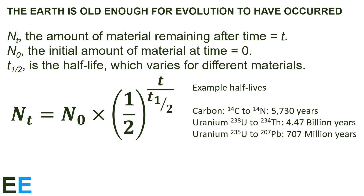For example, once the time equals the half-life, that exponent is 1, and the amount of material equals the initial material times one-half. If the amount of time was twice the half-life, the exponent would be 2, and the amount of material would equal the initial amount times one-half squared, which is one-fourth. Using this equation becomes very difficult if the time is a large multiple of the half-life, because the amount of measurable material becomes too small. Luckily, there are a variety of radioactive materials with a range of half-lives that allow us to accurately date many different deposits.